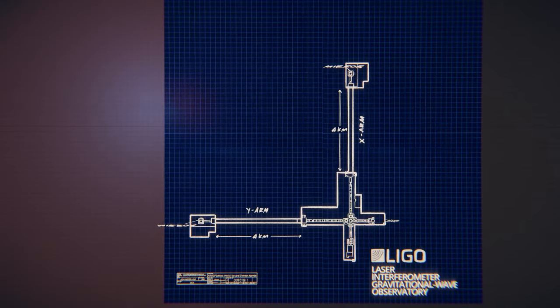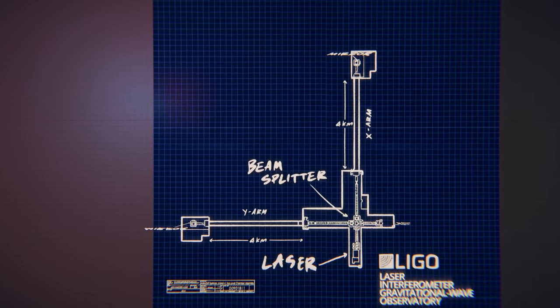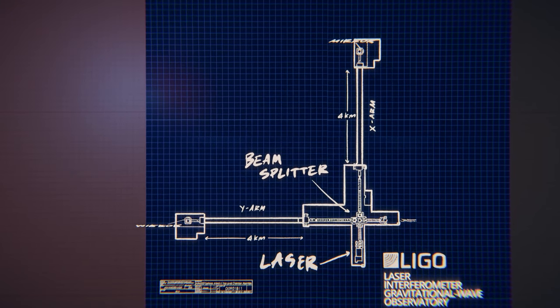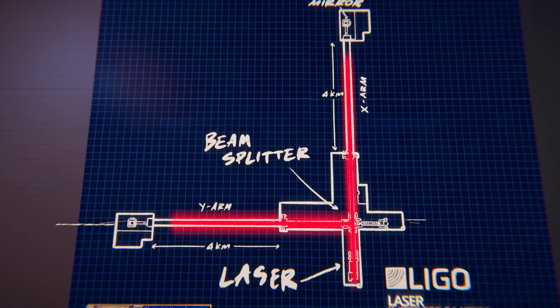Any interferometer has a few main components. So one of them, for example, is the laser. Then you have something called the beam splitter, which is right in the center. And the idea with the beam splitter is that you want to take one light and then you want to split it along two parts.